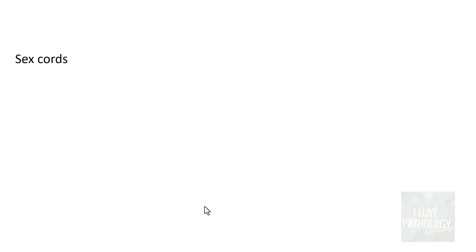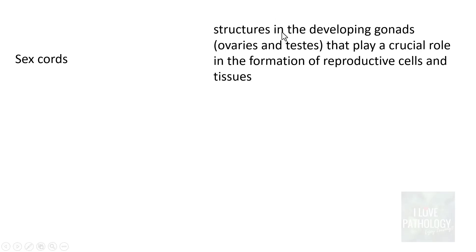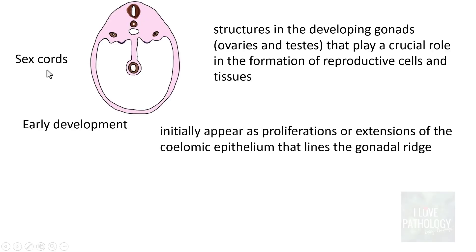What are sex cords? From embryology, sex cords are structures in the developing gonad - which could be ovaries or testes. They play a very crucial role in the formation of reproductive cells and tissues. During early development, these sex cords develop as proliferations or extensions of coelomic epithelium that lines the gonadal ridge.